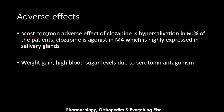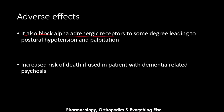The most common adverse effect of clozapine is hypersalivation, occurring in 60% of patients, due to its agonist activity at M4 receptors highly expressed in salivary glands. It also leads to metabolic syndrome in the form of weight gain and high blood sugar levels due to serotonin antagonism. It blocks alpha-adrenergic receptors leading to postural hypotension and palpitations, and increases the risk of death in patients with dementia-related psychosis by increasing stroke risk.